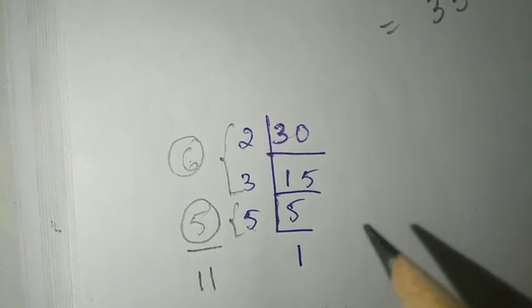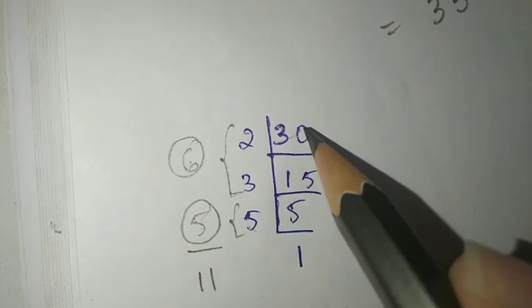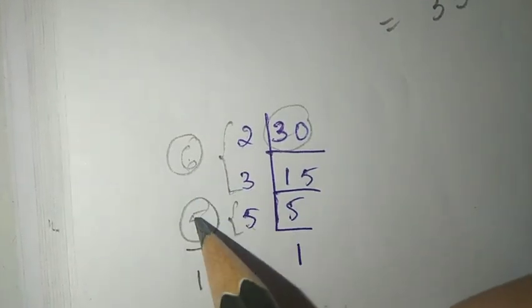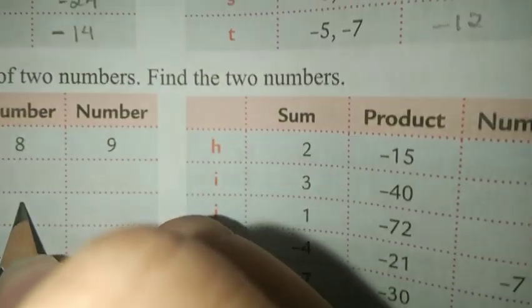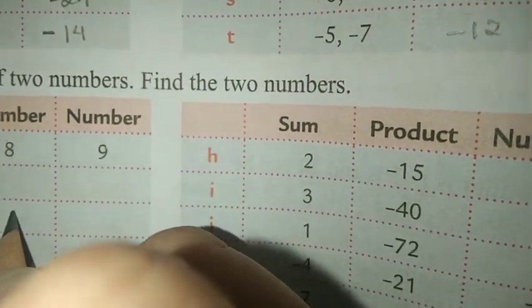If you multiply 6 and 5 you get 30. If you add them you get 11. Therefore the answers are 6 and 5. The two numbers are 5 and 6.